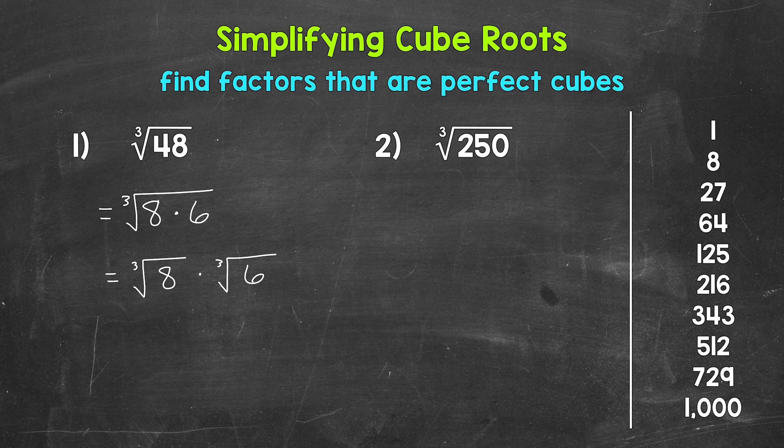We can take the cube root of 8, which is 2. 2 times 2 times 2 equals 8. So the cube root of 8 is 2. So we end up with 2 times the cube root of 6.